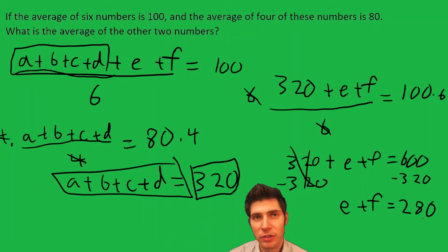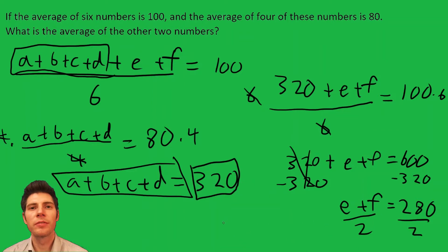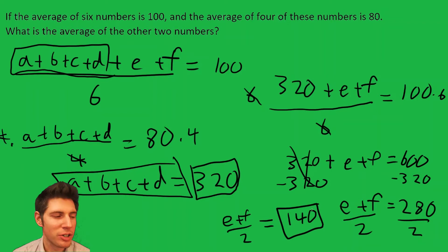And they want to know what the average of the two numbers is, so I'm going to divide both sides by two. I end up getting (e+f)/2 = 140. So 140 is the average of the other two numbers, and that is the answer to the question.